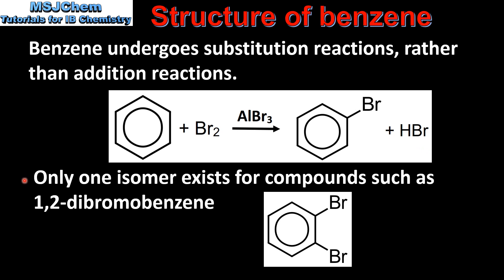Our final reason is that only one isomer exists for compounds such as 1,2-dibromobenzene. Here we have the structure of the only isomer for 1,2-dibromobenzene. If benzene had two distinct resonance structures, you'd expect two different isomers, but only one is produced.